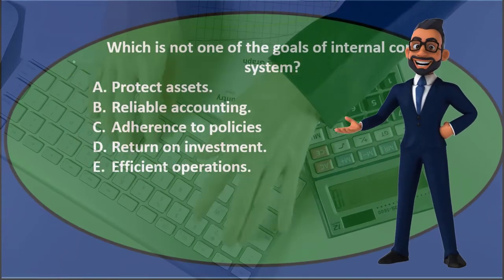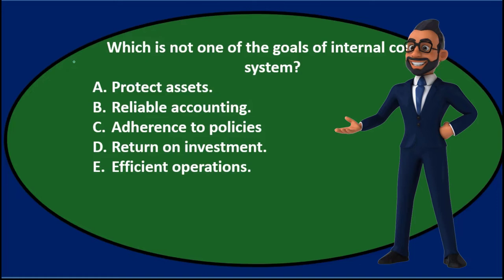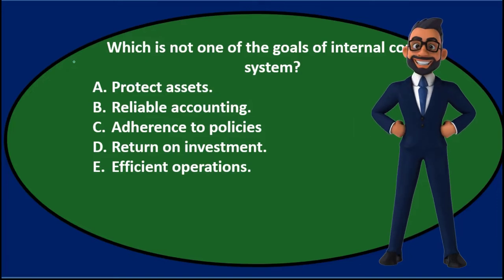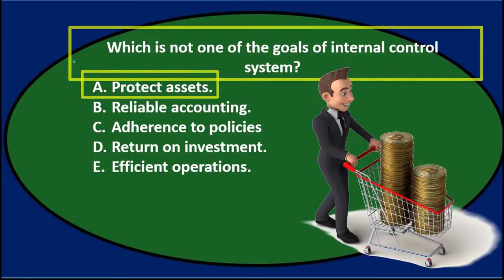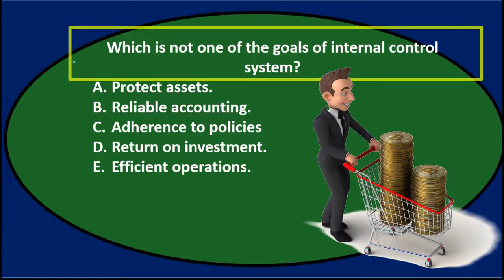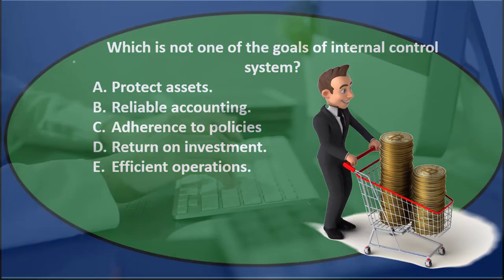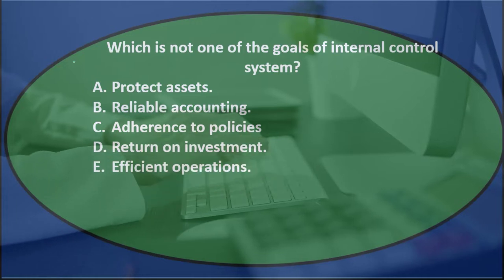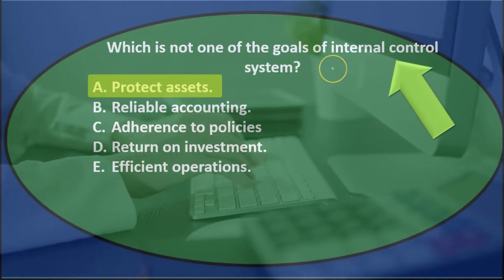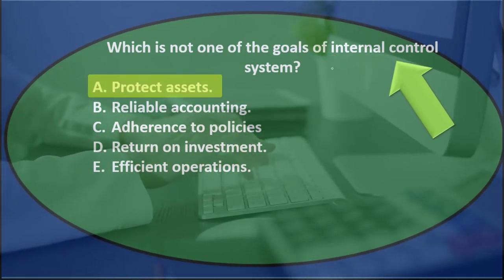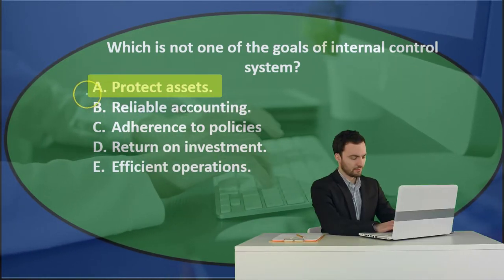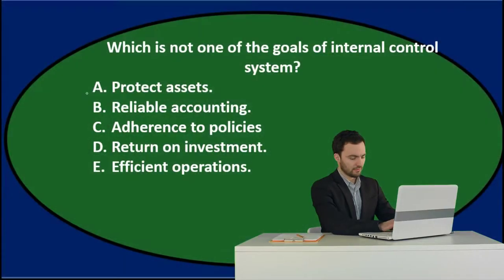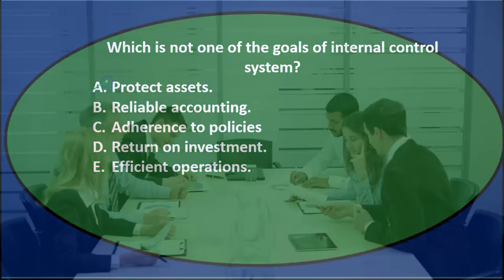So once again, we'll read the question and see if we can cross any out with the process of elimination. Which is not one of the goals of an internal control system? A. To protect assets. The internal control system typically is going to achieve some objectives. Protecting assets, I would think, is one of the core things we want to do with internal controls. So I'm going to say it's not that one.